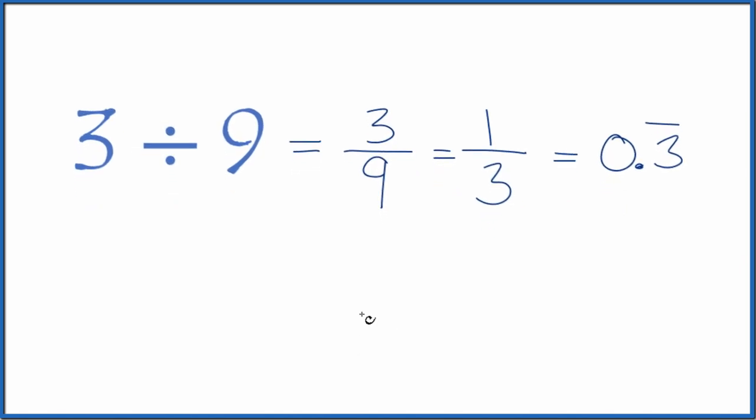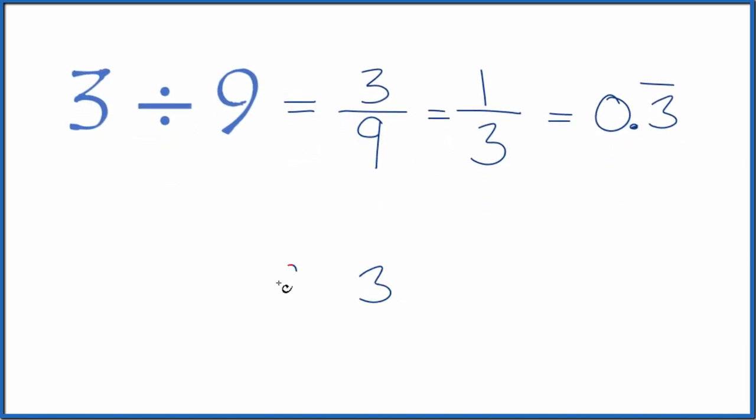The other way we could do this is we could take 3 and see how many times 9 goes into 3. So 3 divided by 9. 9 doesn't go into 3. Let's call this 30 and then put a 0 with a point up here.